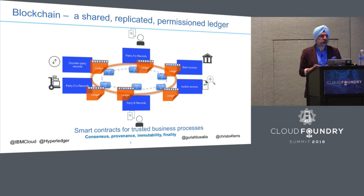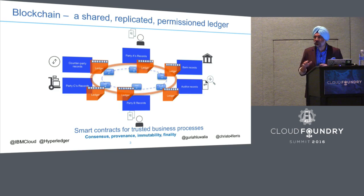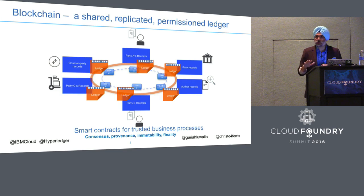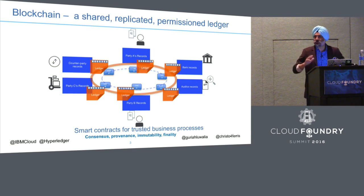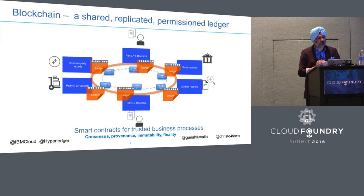Every node on a blockchain network basically has an identical database. That makes it not just a decentralized and consistent database, but also a transaction analysis platform — so it is both the database as well as a new kind of transaction analysis system.